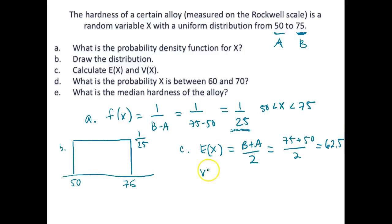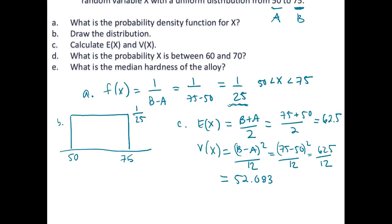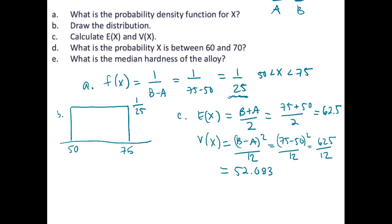And our variance of x is equal to (b-a)²/12, which in this case is (75-50)²/12, which is equal to 625/12, which equals 52.083. Because this is a common distribution, it's really nice. We don't have to do any integration to calculate those values.